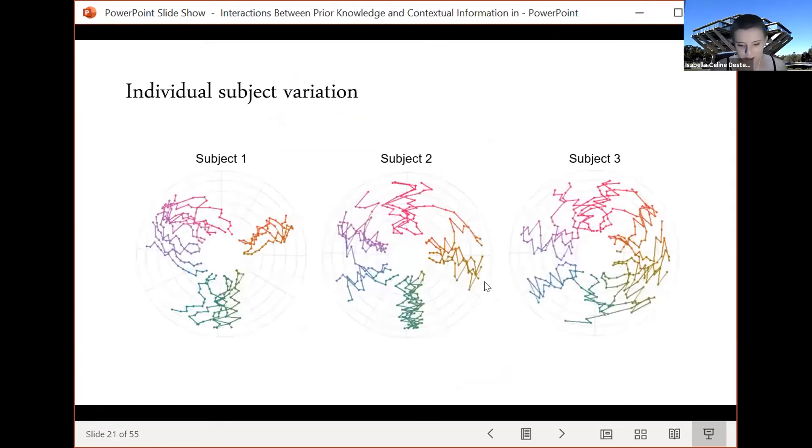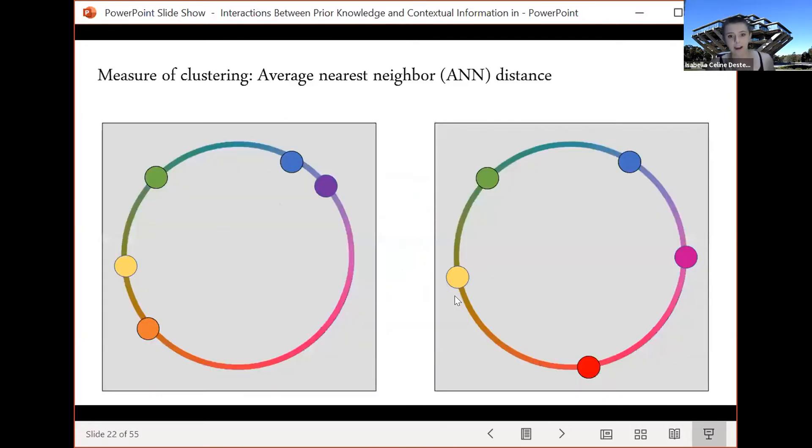When we look at the convergence patterns of different subjects they differ significantly and we wanted to do an analysis of this so we looked at the average nearest neighbor distance. The display on the left is significantly more clustered than the display on the right if we take the distance between each color and its nearest neighbor on the color wheel and take the average that will be smaller for the display on the left than that on the right. We computed this within subject for each iteration and took the ratio of this average nearest neighbor distance to that which would be expected by chance.